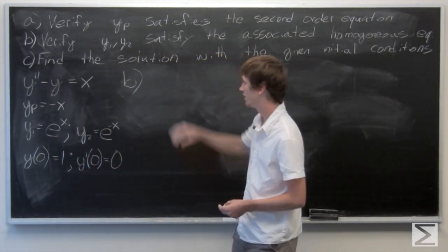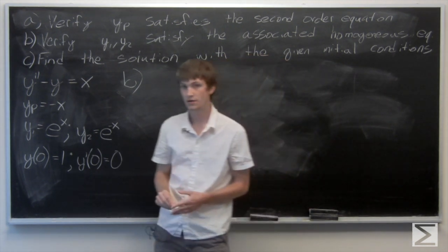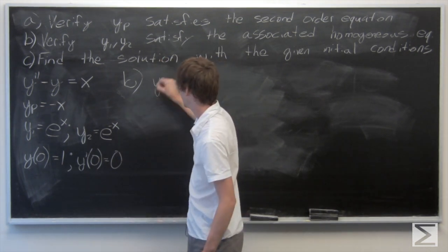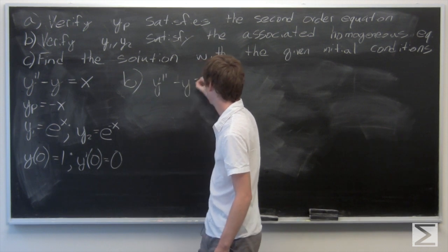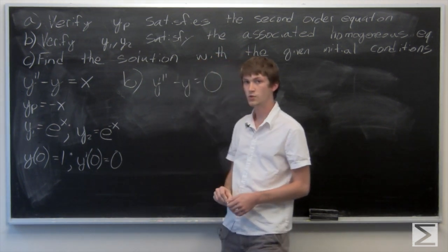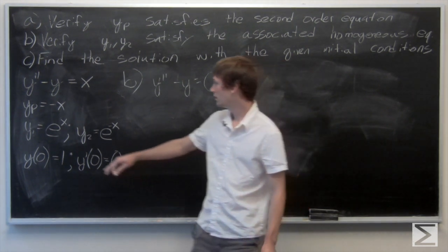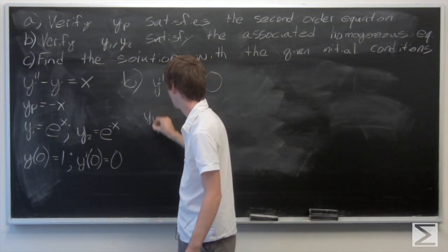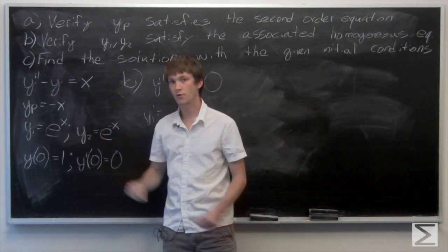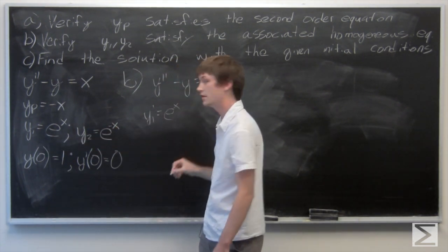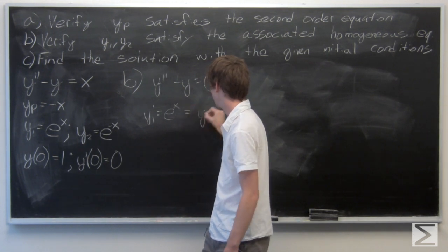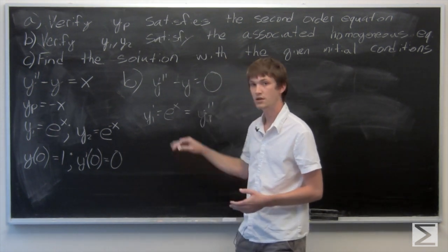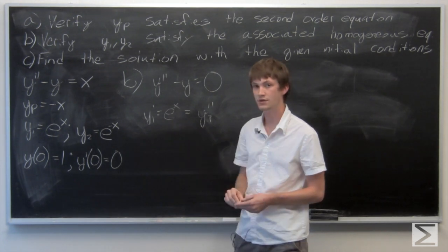For part b, we want to verify that y1 and y2 satisfy the associated homogeneous equation. The homogeneous equation associated with this is y double prime minus y equals 0. We're going to take the second derivative of both. The first derivative of y1 is e to the x, which is the same as y1 double prime, since e to the x — no matter how many times you take the derivative — it's always e to the x.